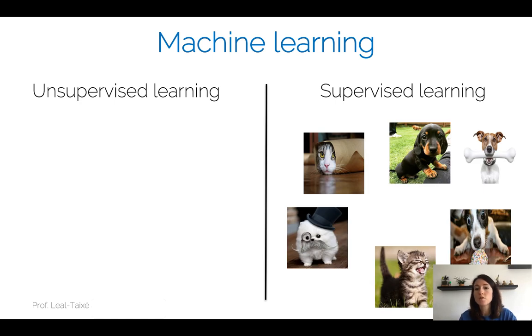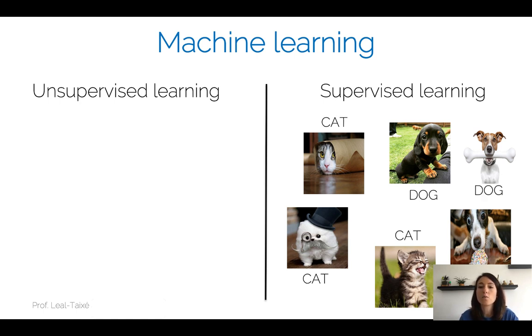In the case of image classification, we saw at I2DL that we had images of cats and dogs, and our goal was to put a label on top of them — an image classification task.